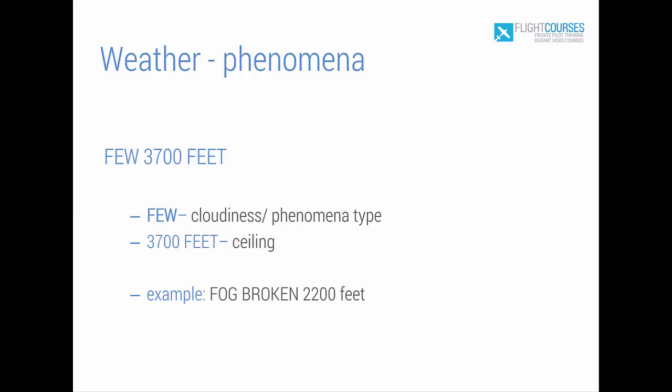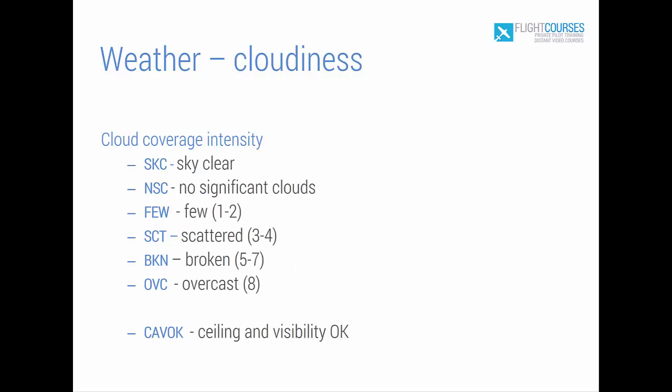Now we hear 'few at 3,700 feet.' This is a description of cloud type or phenomenon type and the ceiling — the lower layer of cloudness. Here we can see a list of cloud coverage intensity abbreviations. Let's discuss CAVOK separately.